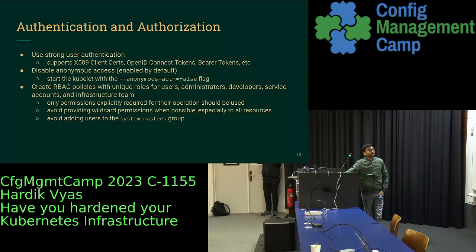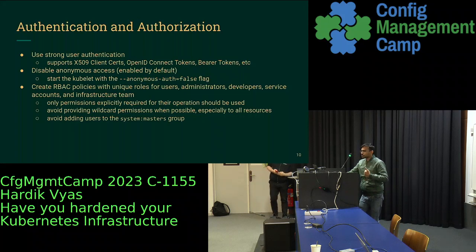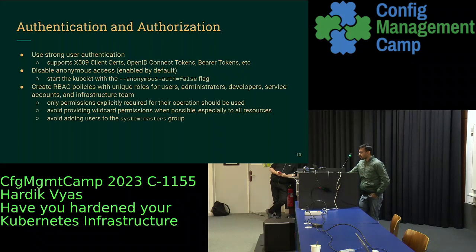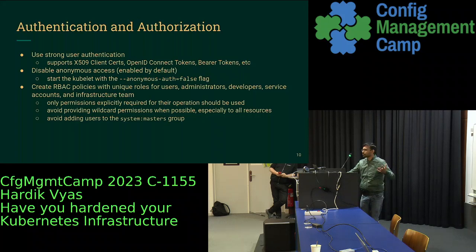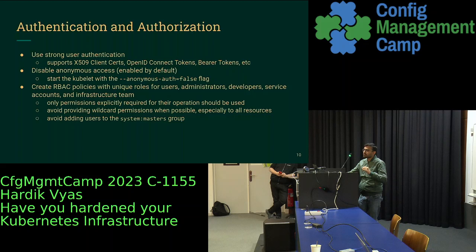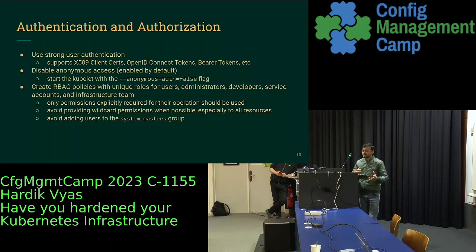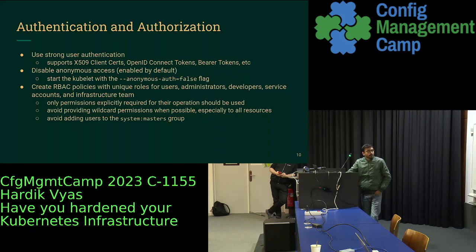For authentication and authorization: use strong authentication methods, do not store passwords in static files, and ensure update policies are enabled. Grant only the permissions required to perform operations and avoid using wildcards when defining verbs in roles — manually specify the verbs you really need. When creating cluster role bindings, ensure cluster-level binding is actually required. Avoid adding users to the system masters group as it bypasses all restrictions.